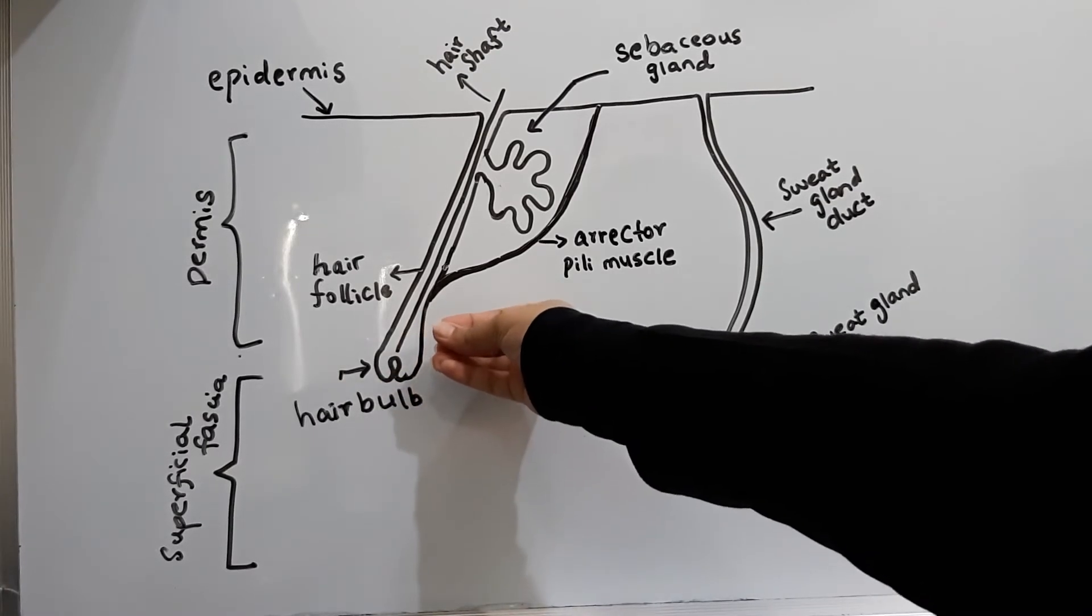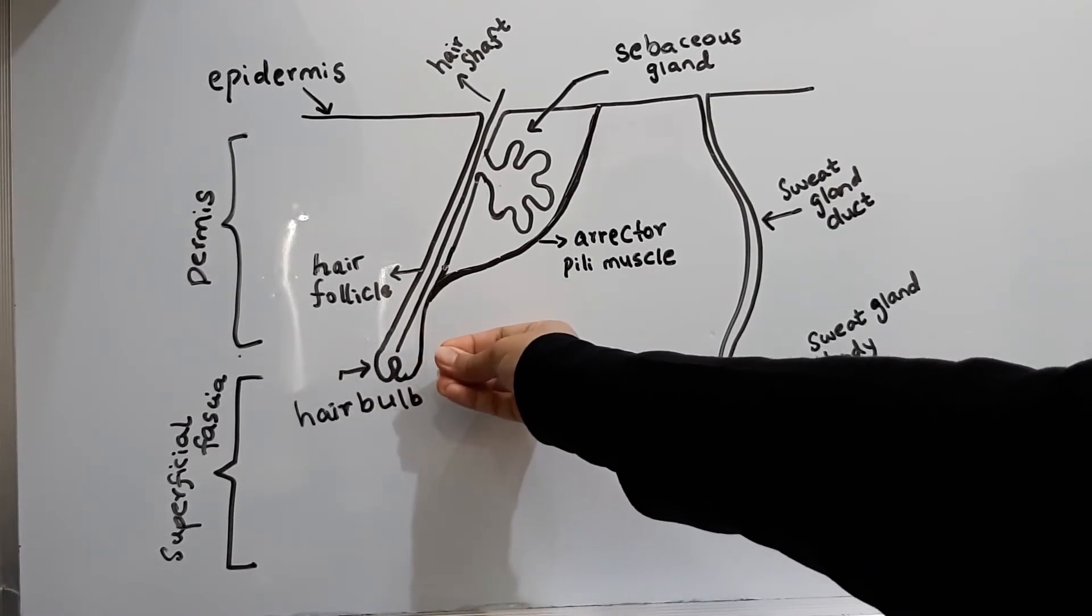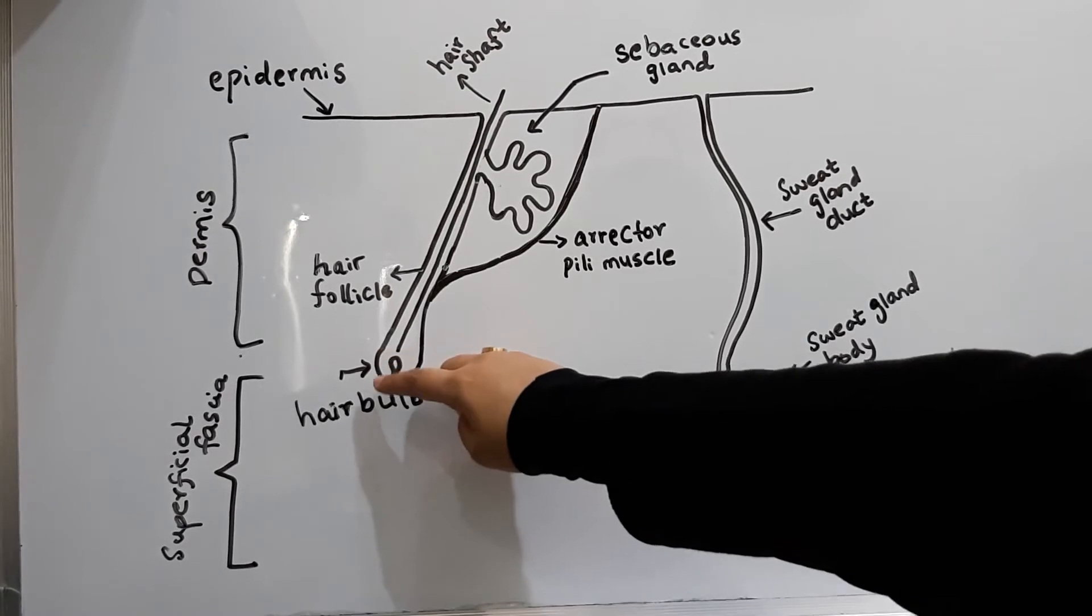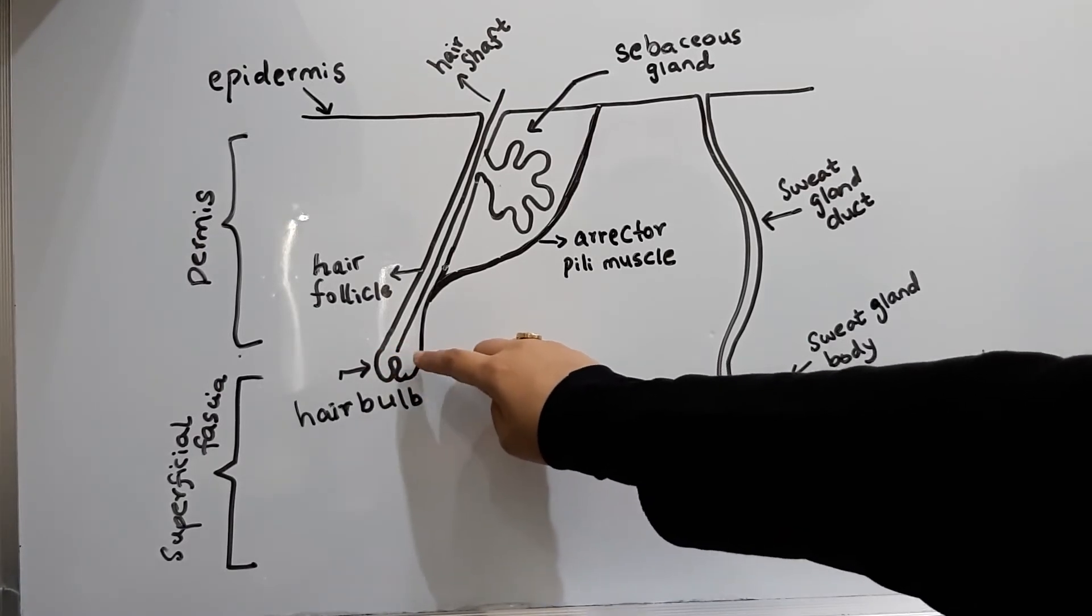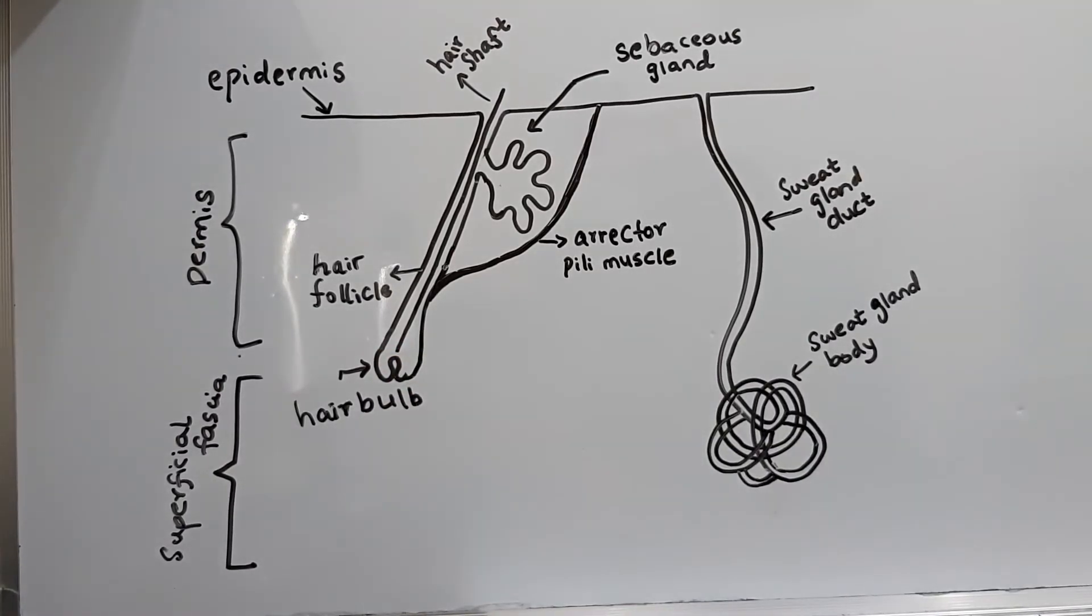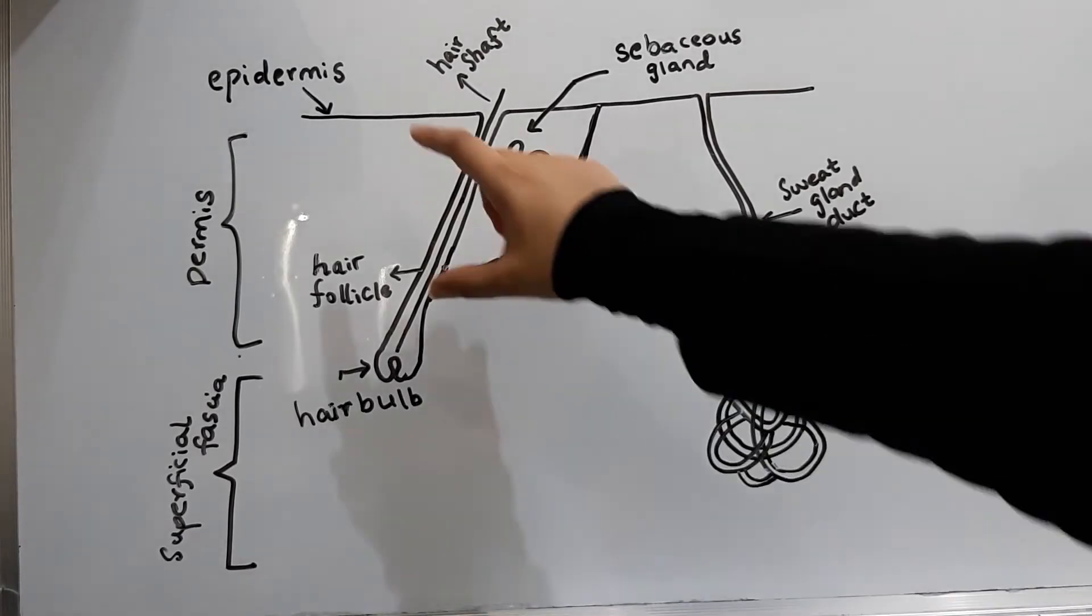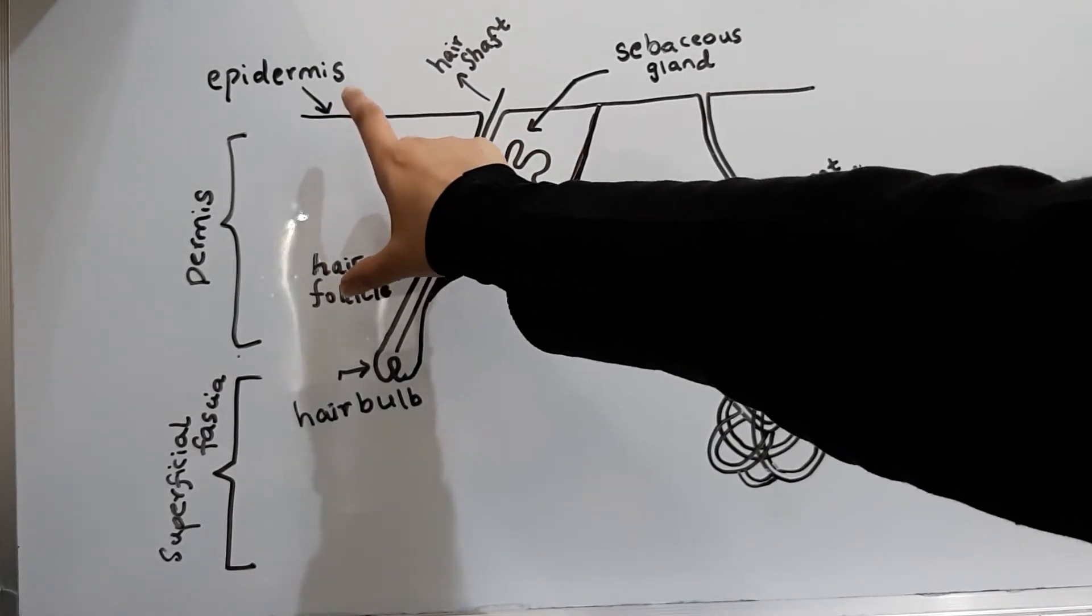And ends in a concavity or an expanded extremity called the hair bulb. This concavity of the hair bulb is filled with vascular connective tissue which is called the hair papilla. I have done a video on the layers of the skin: epidermis, dermis, and superficial fascia, which is also called the subcutaneous tissue.